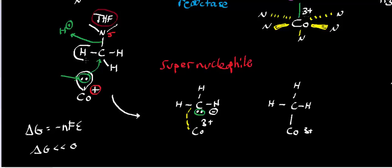To be specific, it's this methyl group right here that's getting reduced. In the process, the nitrogen-carbon bond breaks as the electrons there go and extract a proton from a histidine. And then you'll get the second half of the mechanism. But basically what it is, is this methyl anion interacting electrostatically with cobalt three plus, and this bond — that's called a coordinate covalent bond. It's an extremely strong bond — not as strong as a covalent bond, a little bit weaker, but stronger than an ionic bond.